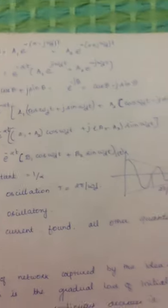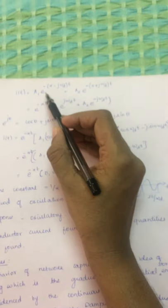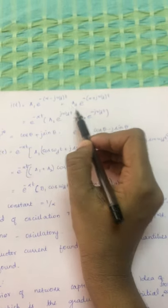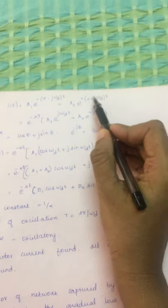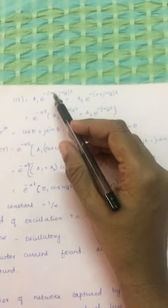These roots are complex conjugate roots, so the solution will be of the form: i(t) = A1*e^(s1*t) + A2*e^(s2*t).